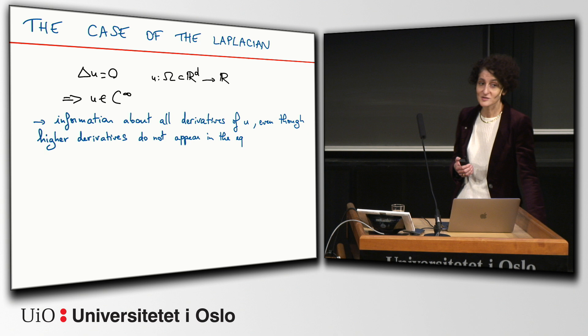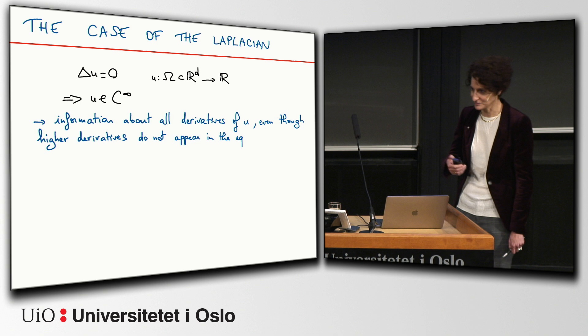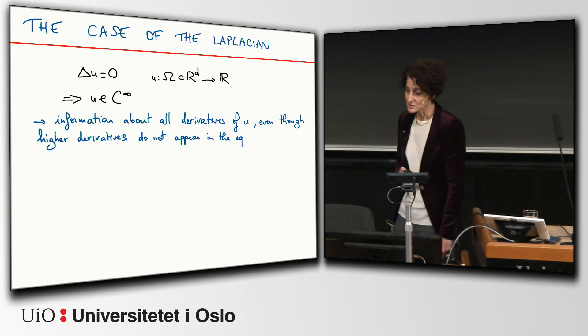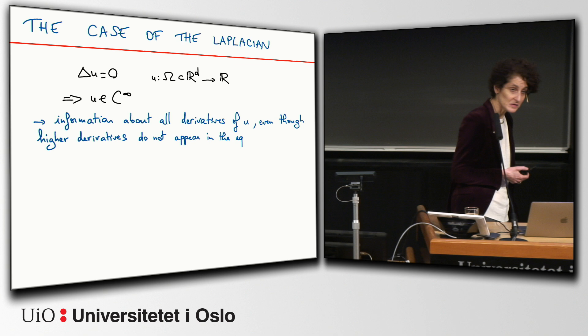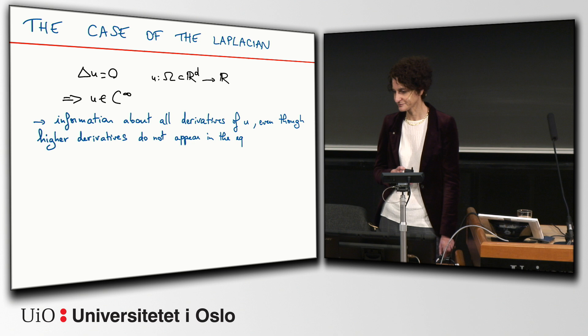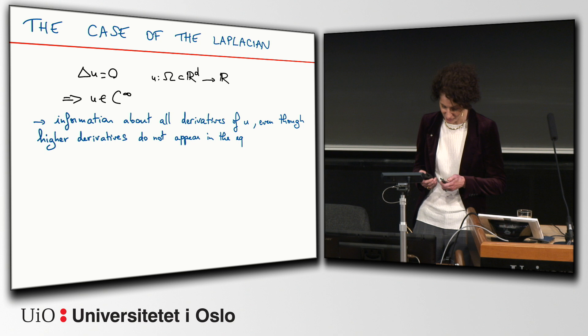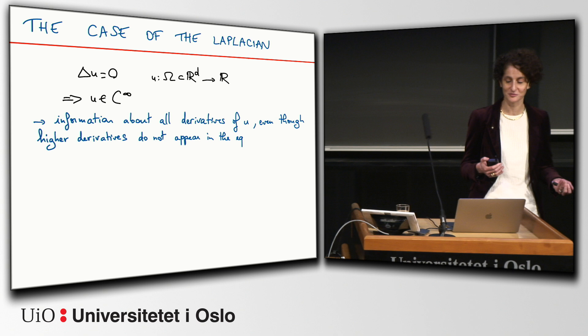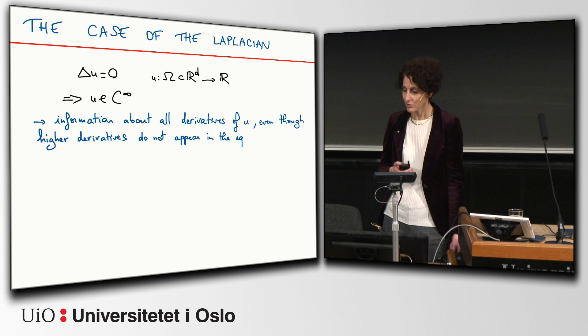The Laplacian is the sum of second derivatives in all the directions in dimension D. If you have a solution of Laplacian U equals zero, it's called a harmonic function, then it's C-infinity, which means it's infinitely many times differentiable. That maybe is a little bit surprising at first because the equation talks about the second derivatives of U, but doesn't talk about higher derivatives of U, and yet we are able to obtain information about all derivatives of the function.